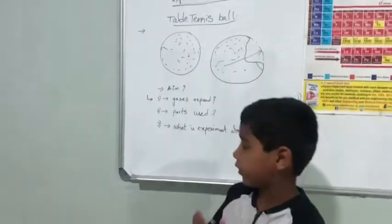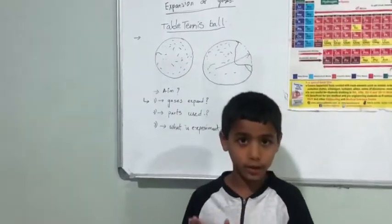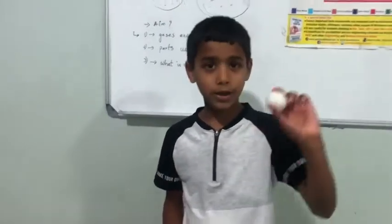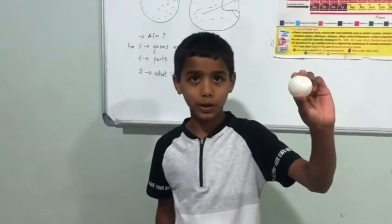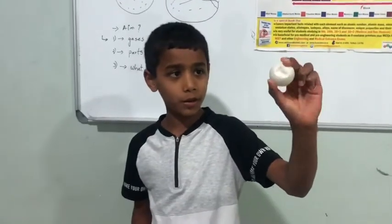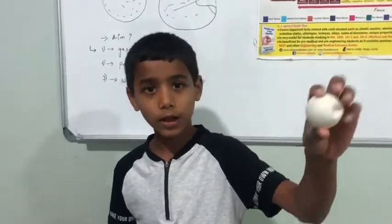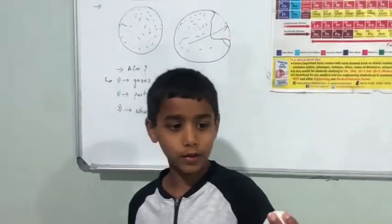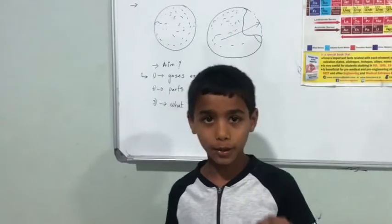So the aim of this experiment is — you see my tabletop has a bowl that I dented accidentally. I have to fix it, there has to be a way.